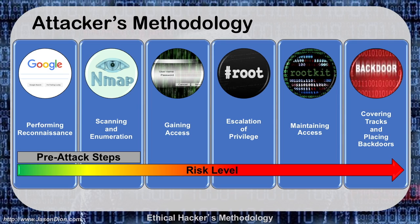Here's a review of the attacker's methodology. We performed our reconnaissance, scanned and enumerated the network, gained access, escalated our privileges, maintained the access, and covered the tracks and placed back doors. As we moved to the right in our stages three, four, five, and six, our risk level went up of being caught. We had very little risk level in performing reconnaissance and moderate risk level in scanning and enumeration.